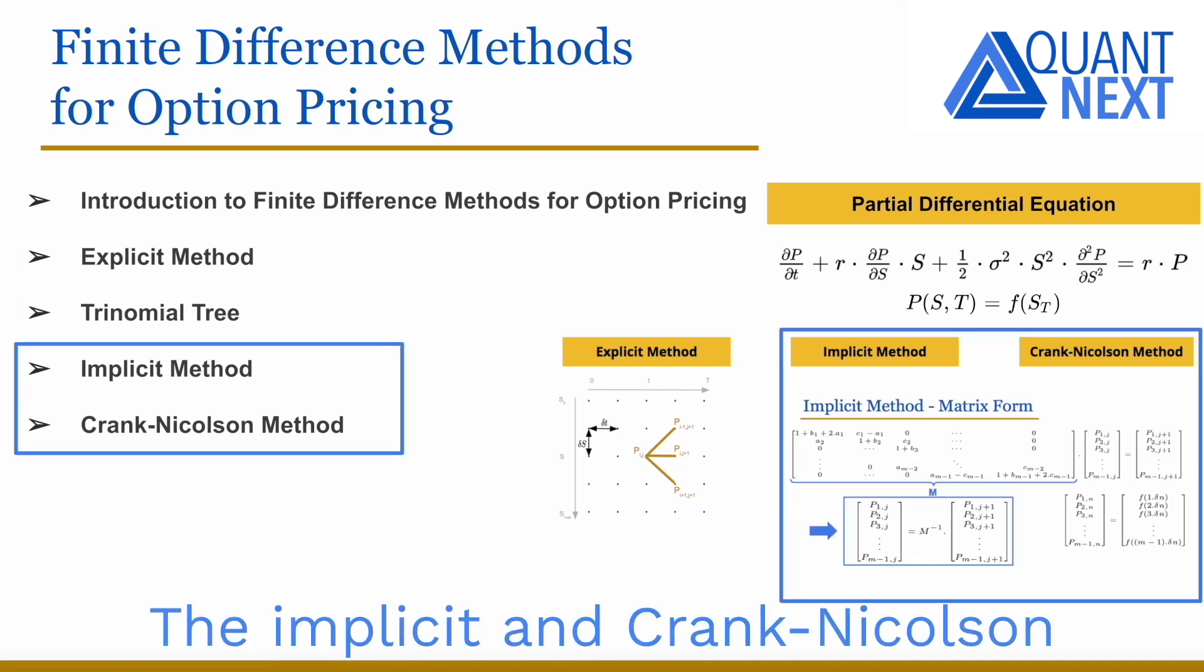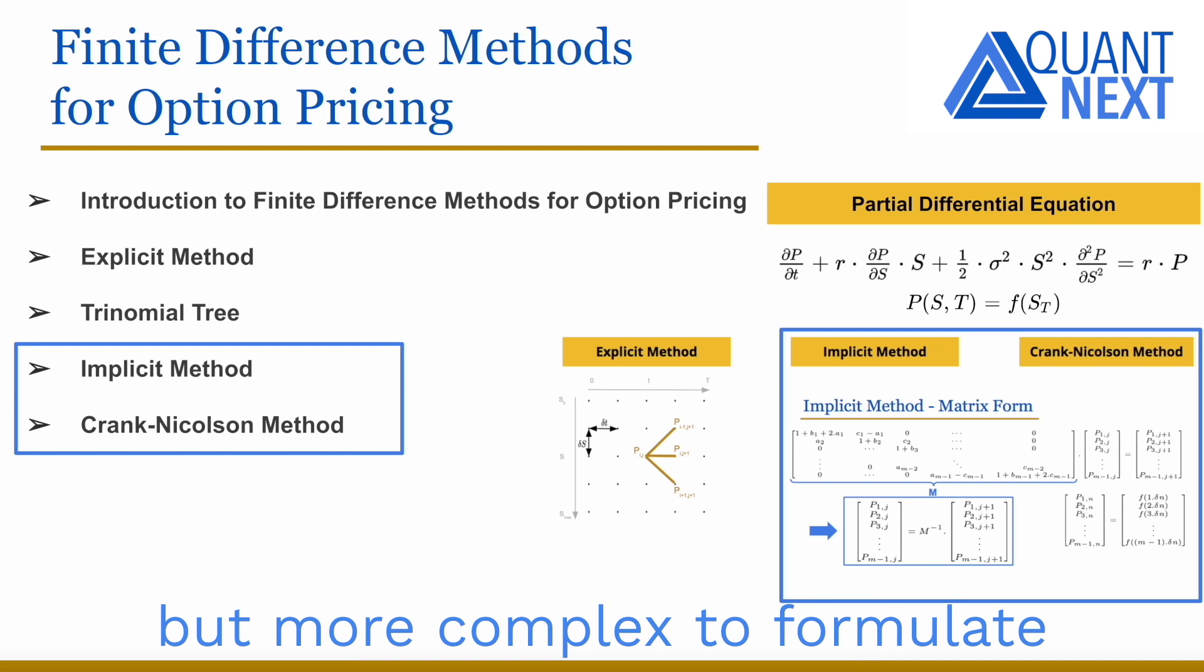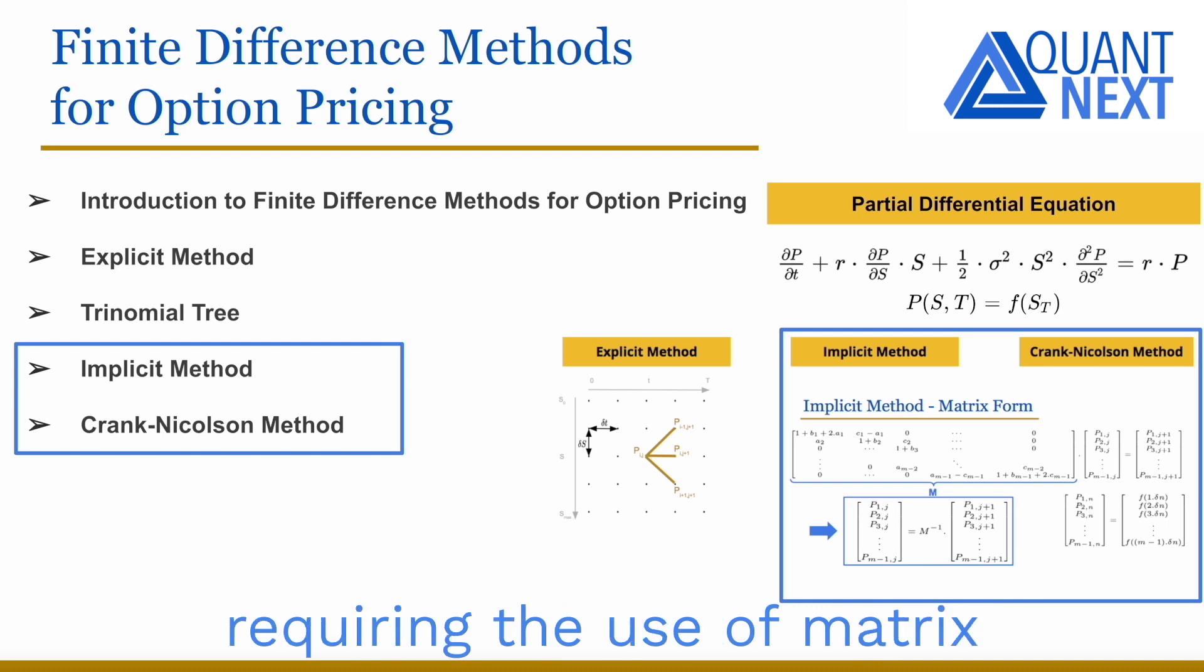The implicit and Crank-Nicolson are stable methods but more complex to formulate, requiring the use of matrix calculations.